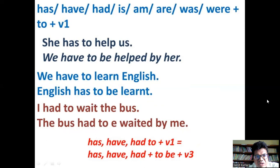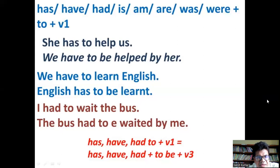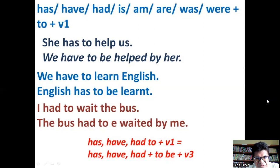When you have structures with 'has/have/had + to' plus the present form of the verb — for example, 'She has to help us' — the object 'us' comes to the subject position: 'We have to be helped by her.' You must follow the four rules: change the place of subject and object, add an auxiliary verb, make the past participle form of the main verb, and add a preposition. Example: 'We have to learn English' → 'English has to be learned by us.'